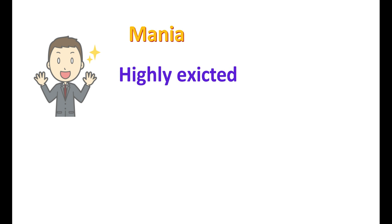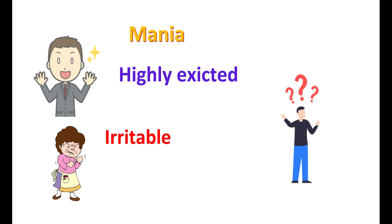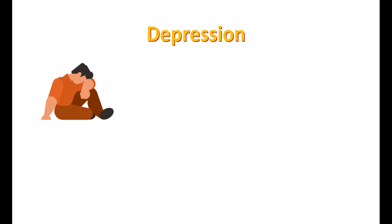Mania is a condition of hyper-excitability where people are highly excited. The mood is unstable, with exciting ideas that shift very quickly. People are more irritable with racing thoughts and are not able to sleep well. These symptoms are collectively called mania. Depression is quite opposite to the manic phase.